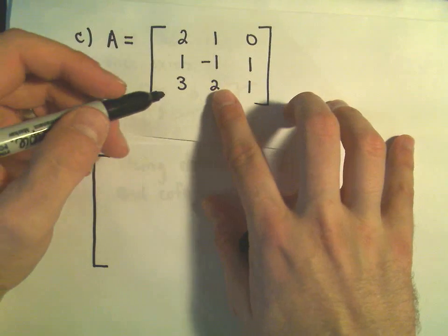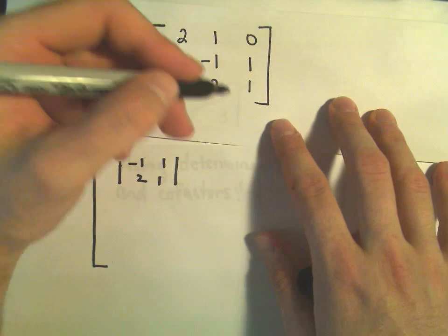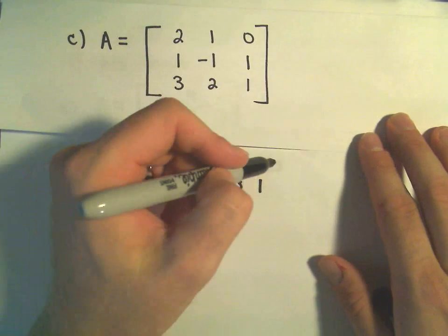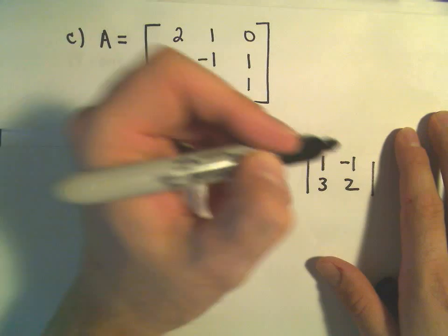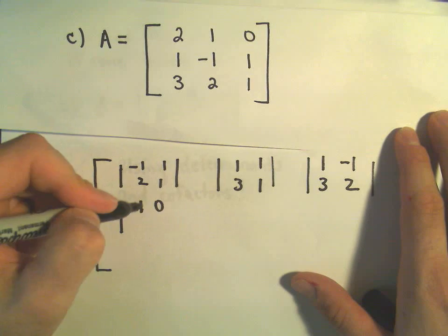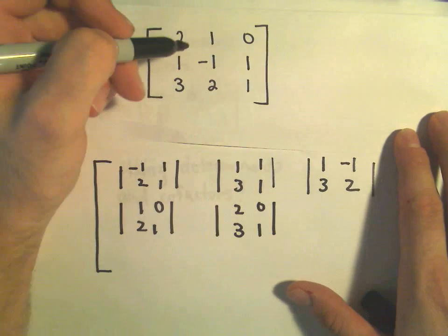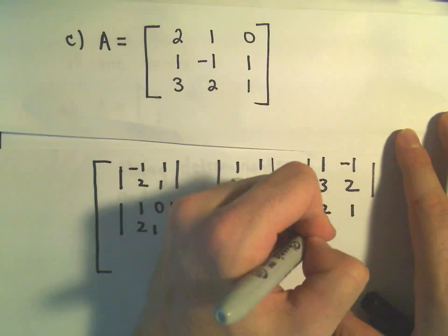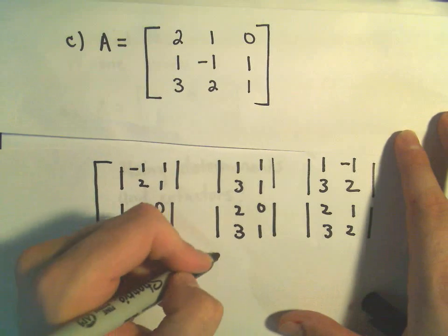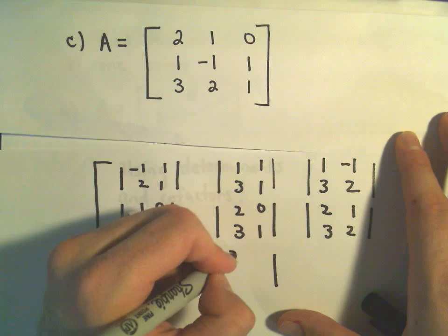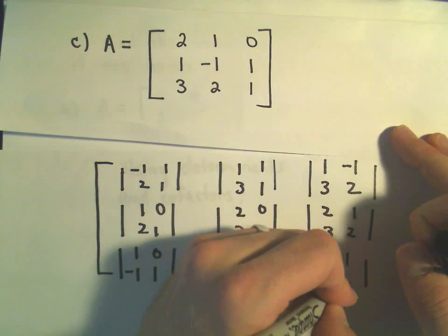The first entry uses [-1, 1; 2, 1]. Covering the first row and second column gives [1, 1; 3, 1]. Covering the first row and third column gives [1, -1; 3, 2]. Covering the second row and first column gives [1, 0; 2, 1]. Second row, second column: [2, 0; 3, 1]. Second row, third column: [2, 1; 3, 2]. Third row, first column: [1, 0; -1, 1]. Third row, second column: [2, 0; 1, 1]. Third row, third column: [2, 1; 1, -1].